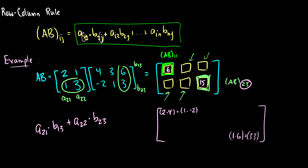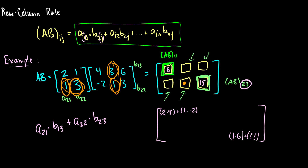If I want to find, for instance, the entry in the second row and second column, I take the second row of the first matrix and the second column of the second matrix, then multiply and add the corresponding entries: the first entry in the row by the first entry in the column, then the second entry in the row by the second entry in the column. That's the row-column rule in a nutshell.